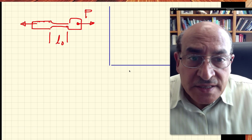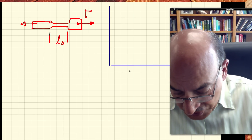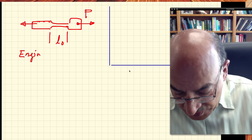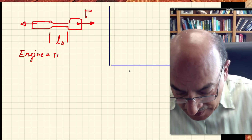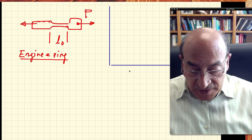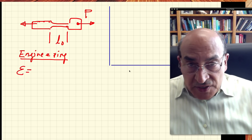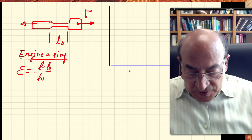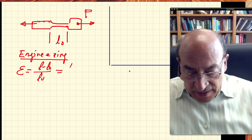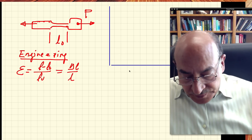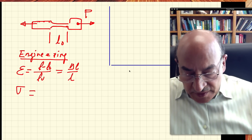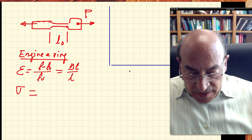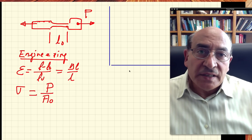We'll use engineering conventions to define stress and strain. Engineering strain is the change in length divided by the original length: ε = Δl / l₀. Engineering stress σ is equal to the load divided by the original cross-sectional area of the sample: σ = P / A₀.